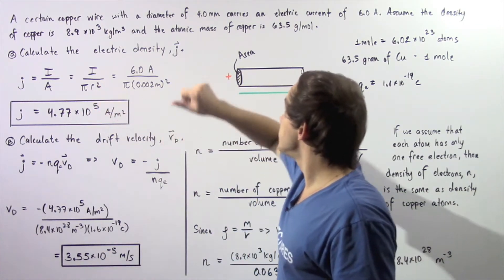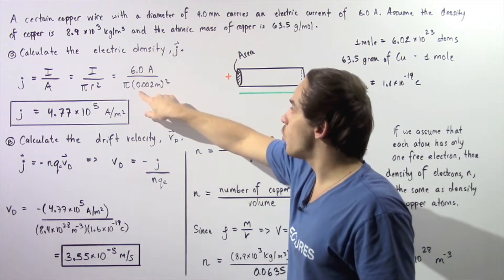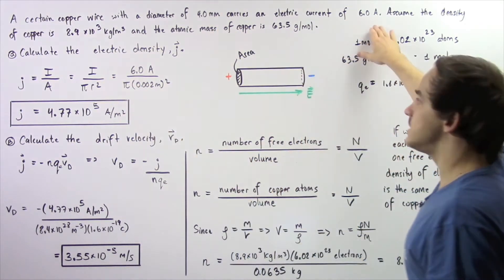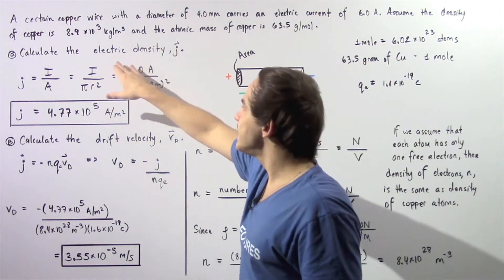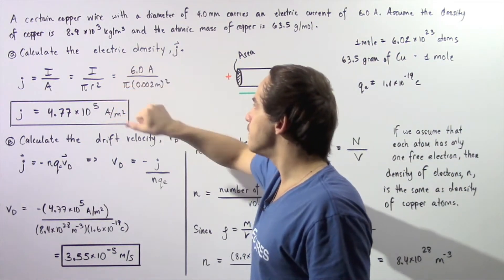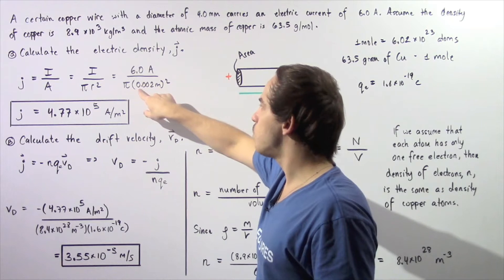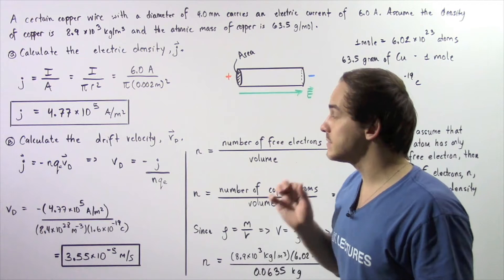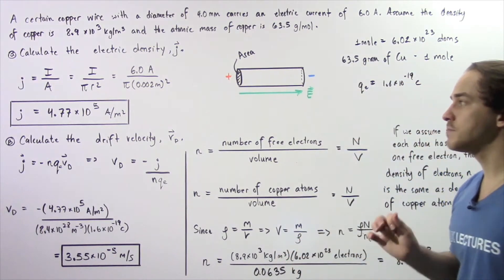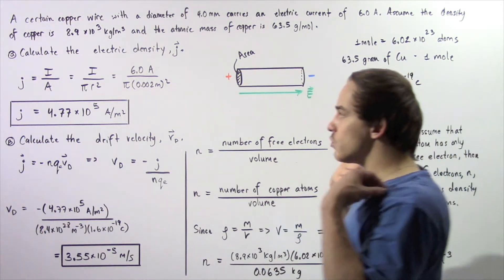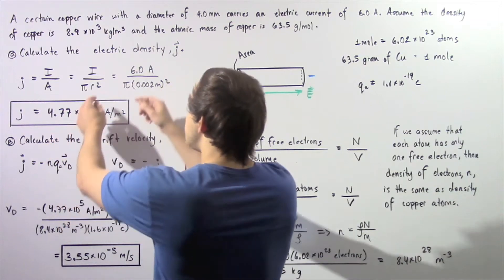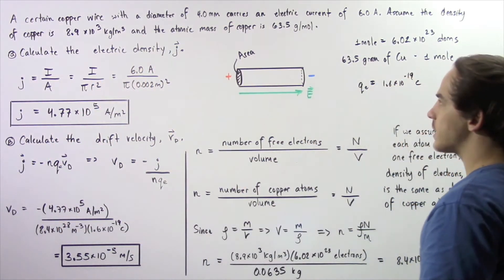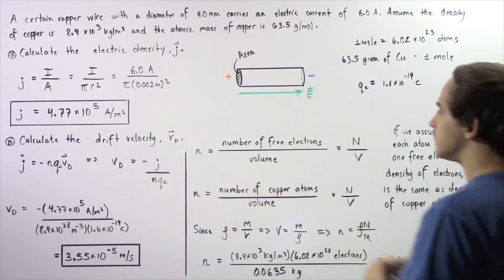The area is given by pi r squared, where r is 0.002 meters — half of the 4 mm diameter — and I is 6 amps. So 6 amps divided by pi times 0.002 squared gives us about 4.77 times 10 to the 5 amps per meter squared. This is the magnitude of our electric current density, and it points in the same direction as our electric field.